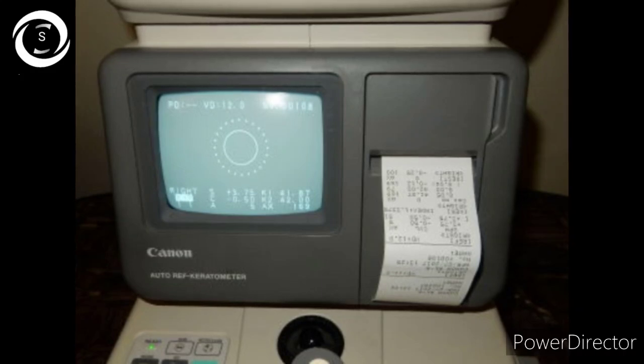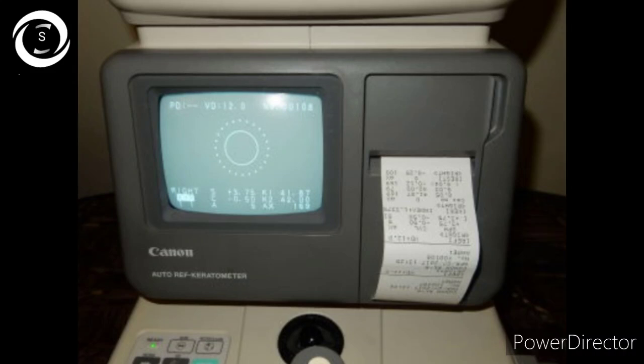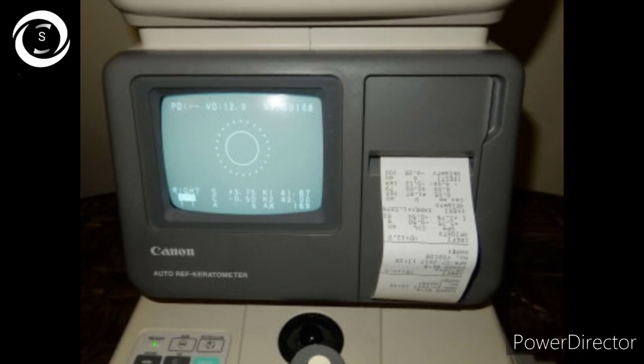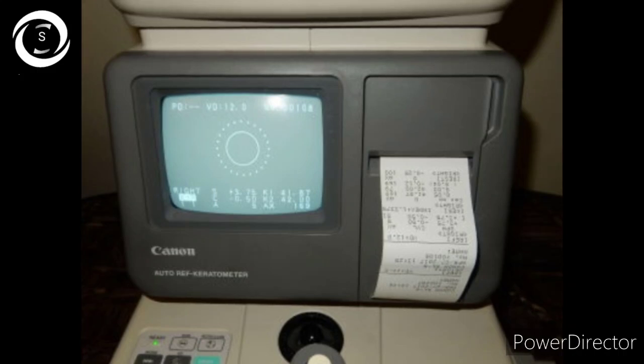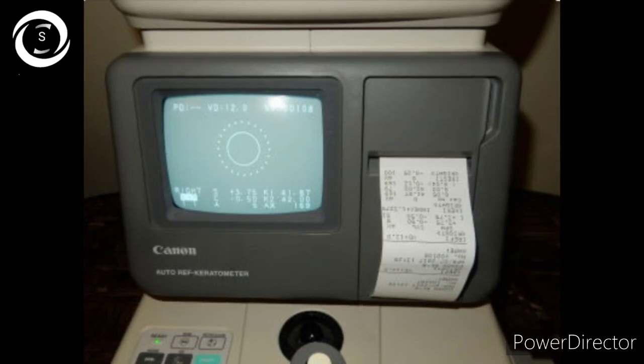Automated keratometry is easy to use, time-saving, and uses infrared light to illuminate the mires with photodetector detection. It is incorporated in IOL Master, Orbscan, Pentacam, and auto refractor keratometers like the Canon. That was all about keratometry in the second corneal topography series. Thank you.